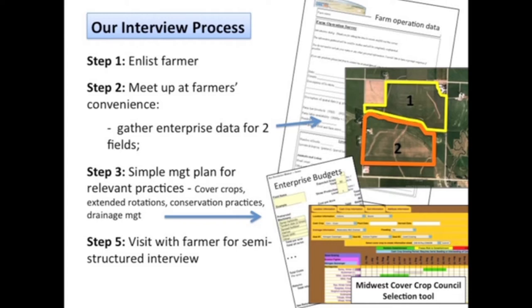With the enterprise data gathered, we're going to do some simple management planning regarding relevant practices — looking at cover crops, extended rotations, conservation practices, and in some cases drainage management. We'll use some pre-existing tools calibrated for this purpose. From there, we use that as a platform to begin conversations about practices. We're doing semi-structured interviews, meaning all farmers are asked the same questions, but each interview takes on a life of its own — probing and follow-up questions are contingent upon where the farmer wants the conversation to go.